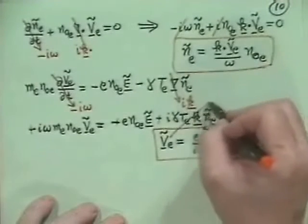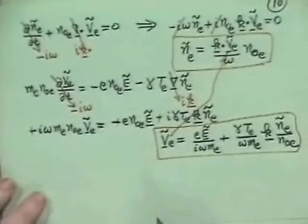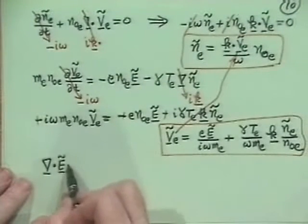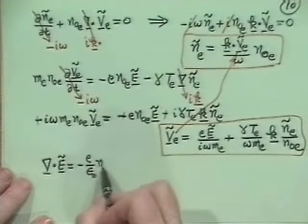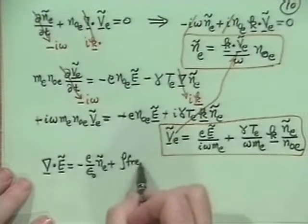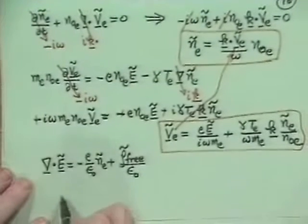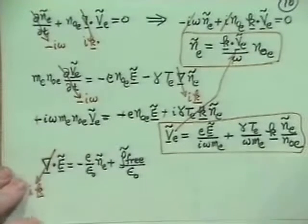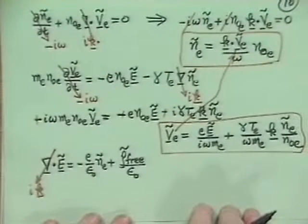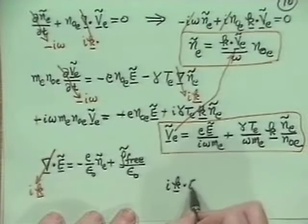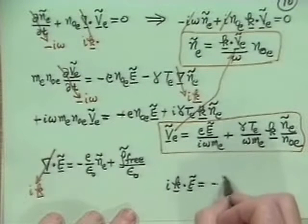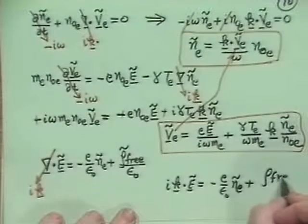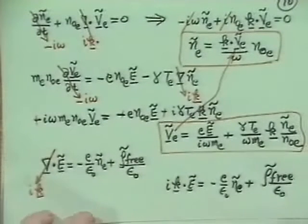You can already see what we're going to do: just substitute this into the V that we need there. Our final equation is Gauss's law. Divergence of Ẽ is equal to minus e over ε₀ times Ñ_E plus ρ_free, free charge density divided by ε₀. The del dot becomes iK vector, so: iK vector dot Ẽ is equal to minus e over ε₀ times Ñ_E plus the free charge density fluctuations over ε₀. That's our third equation.